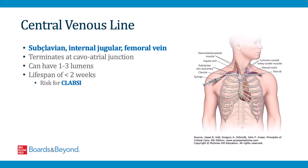A central venous line refers to any IV line that terminates centrally. For this discussion, central venous lines refer specifically to lines placed through the subclavian, internal jugular, and femoral veins — all terminating at the cavoatrial junction. Central venous lines can have 1–3 lumens and have a lifespan of about 2 weeks. The longer they are left in, the higher the risk of CLABSI — central line associated bloodstream infection.